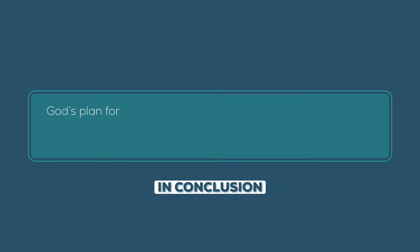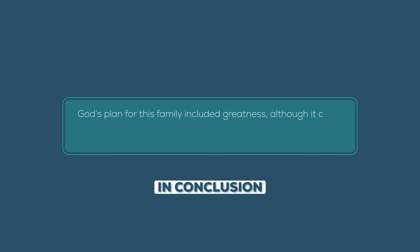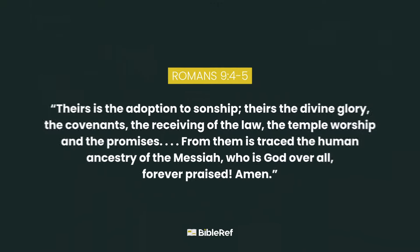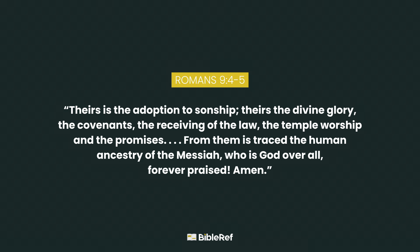In conclusion, God's plan for this family included greatness, although it came through great hardship. Jacob's children were blessed according to the covenant God had made with Abraham. Theirs is the adoption to sonship, the divine glory, the covenants, the receiving of the law, the temple worship, and the promises. From them is traced the human ancestry of the Messiah, who is God over all. Forever praised. Amen.